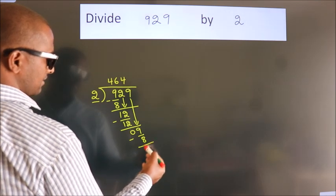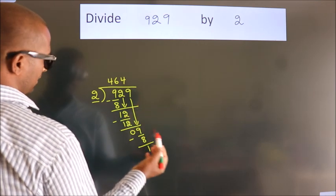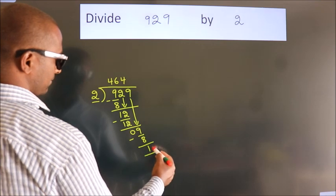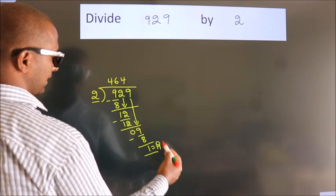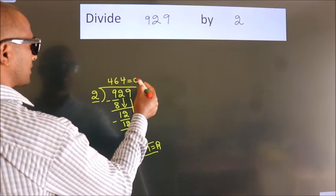After this, no more numbers to bring down. So we stop here. This is our remainder. This is our quotient.